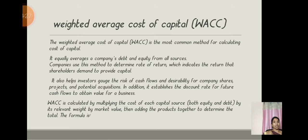Coming to the final stage of cost of capital — the Weighted Average Cost of Capital (WACC). WACC is a common method for calculating cost of capital; it averages a company's debt and equity from all sources. The company uses this method to determine the rate of return that shareholders demand to provide capital. It also helps investors gauge the risk of cash flows and the desirability of company shares, projects, and potential acquisitions, and it establishes the discount rate for future cash flows to obtain the value of a business.